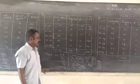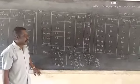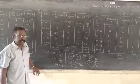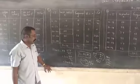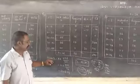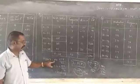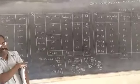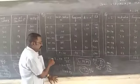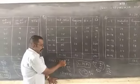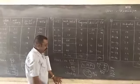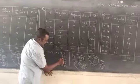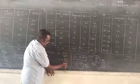So about that assumed mean method. The direct method x bar equal to sigma FX by sigma F. Here the assumed mean method mean x bar equal to A plus sigma FD divided by sigma F. Capital A equal to 25, sigma FD is 270, divided by sigma F, 63.